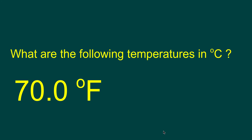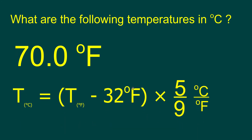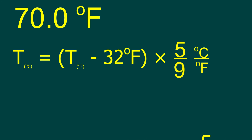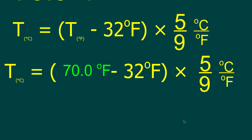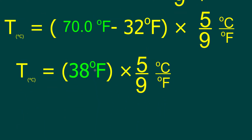For our first calculation, we want to convert 70 degrees Fahrenheit into Celsius. I will take my temperature in Fahrenheit and place it into the equation. So I've placed in my 70 degrees Fahrenheit. We'll now do 70 minus 32 and go step by step. When we do that, we get 38 degrees Fahrenheit multiplied by the ratio of five-ninths degrees Celsius per degrees Fahrenheit.